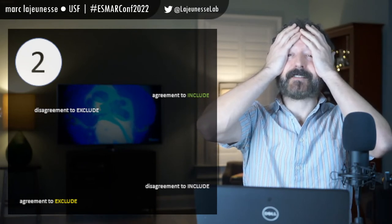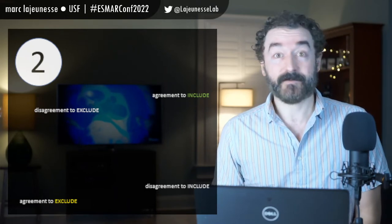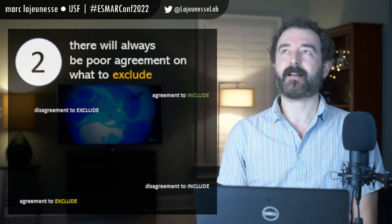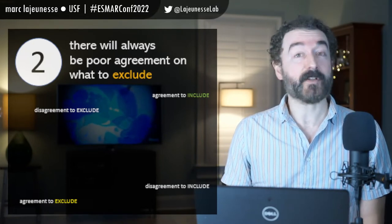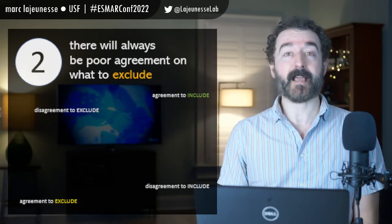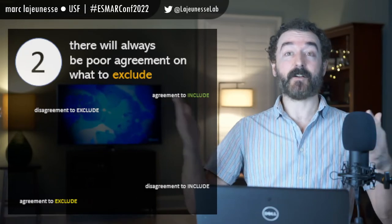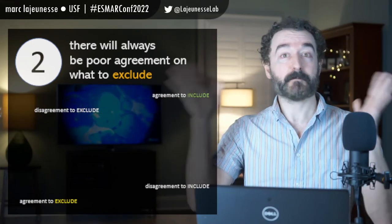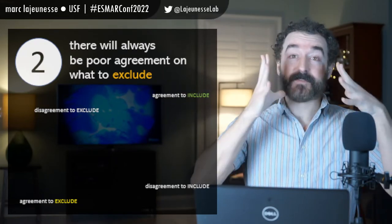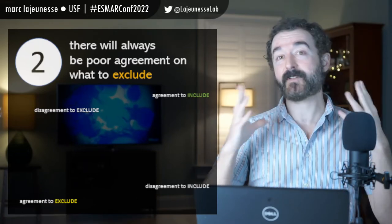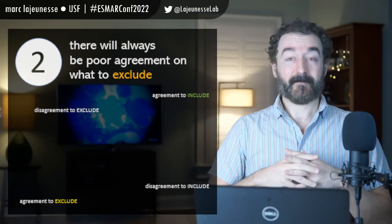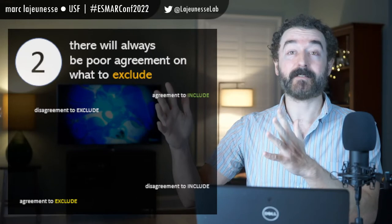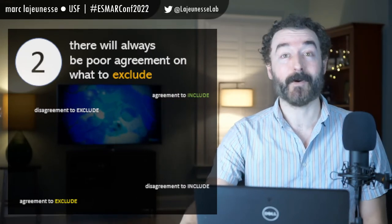The second lesson — and this is really the headache — is that students need to be on the same page to make consistent screening outcomes. Here's a funny thing I've observed: there's always very good agreement on what to include. They read titles and abstracts, see that a study hits the two or three inclusion criteria, check those boxes, and include it. The real challenge is the studies we should exclude — that is what causes the most disagreement among students.